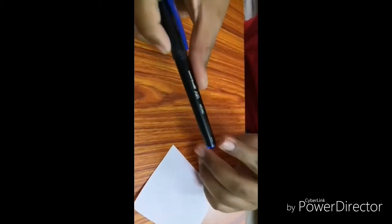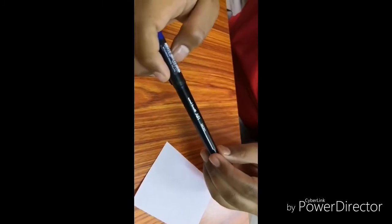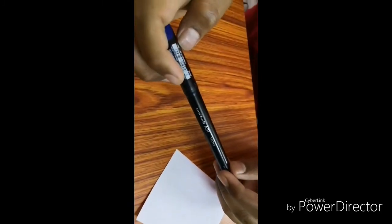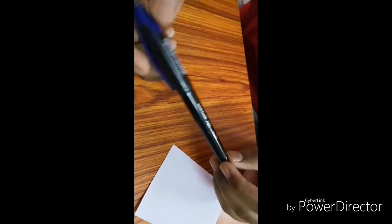Written down here Uniball Air Micro, Japan written, barcodes as we find UBA188M Micro, blue it says.